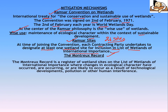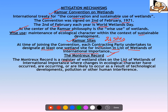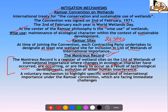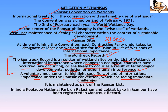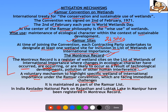The Montreux Record is the register of wetland sites on the list of wetlands of international importance where changes in ecological character have occurred, are occurring, or are likely to occur as a result of technological development, pollution, or other human interference. It is a voluntary mechanism to highlight specific wetlands facing immediate challenges due to human interference. In India, Keoladeo National Park in Rajasthan and Loktak Lake in Manipur have been registered in this record.